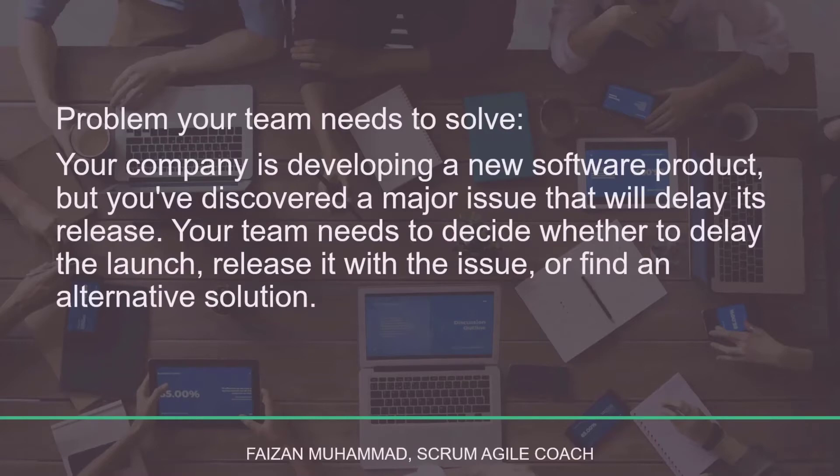Here's the problem: your company is developing a new software product but you've discovered a major issue that will delay its release. Your team needs to decide whether to delay the launch, release it with the issue, or find an alternative solution. Remember to apply your assigned scrum value to contribute effectively to the problem-solving process. Work together, discuss the problem and potential solutions, keeping your assigned scrum value as the leading factor. You may pause the video here to do this part of the exercise.